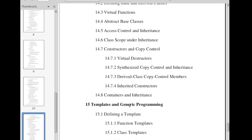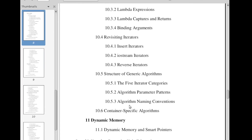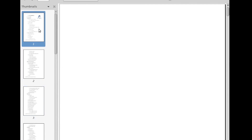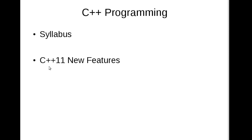Those OOP features are included as the third part of the content, like copy control, overloaded operations, then object-oriented programming topics like virtual functions, derived classes, base classes, constructors, etc. The last part is templates and generic programming. The course content is divided into three different parts: the first covers basics of C++ programming, the second covers library functions and the C++ API, and the third covers OOP tools and features.